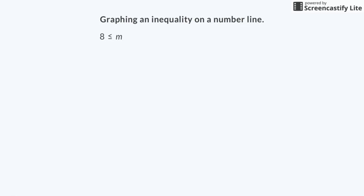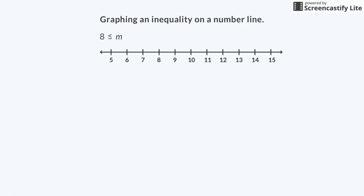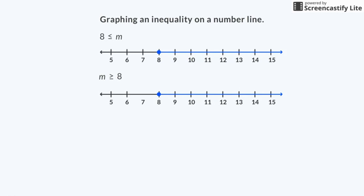Let's try another one: 8 is less than or equal to m. To graph 8 is less than or equal to m, I make a number line from 5 to 15. Then I draw a circle on 8. The circle will be closed because 8 is included in the solution since the inequality uses the less than or equal to symbol. Now, which way to point my arrow? 8 is less than or equal to m, which means that m is greater than or equal to 8. My arrow has to go to the right to show that the solution is numbers greater than or equal to 8. The inequality m is greater than or equal to 8 is the same as 8 is less than or equal to m. Both graphs are the same.